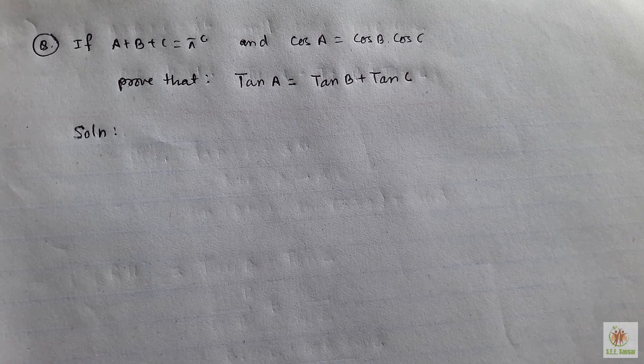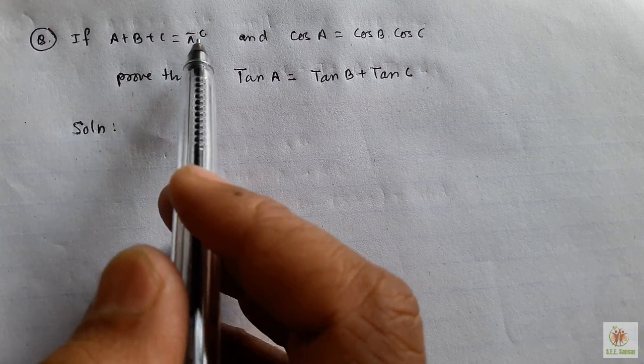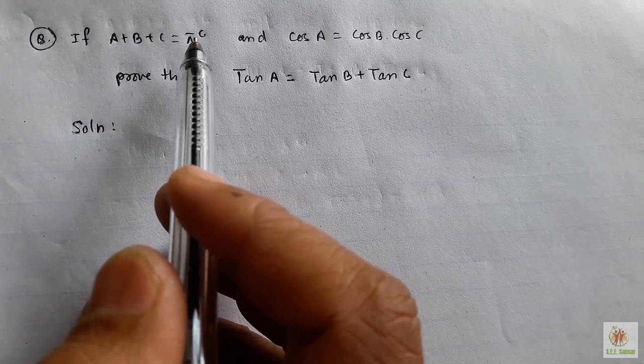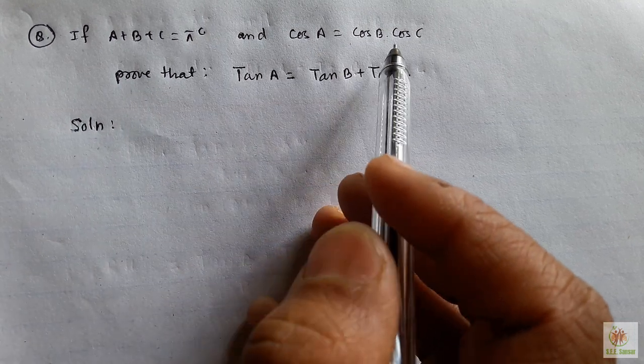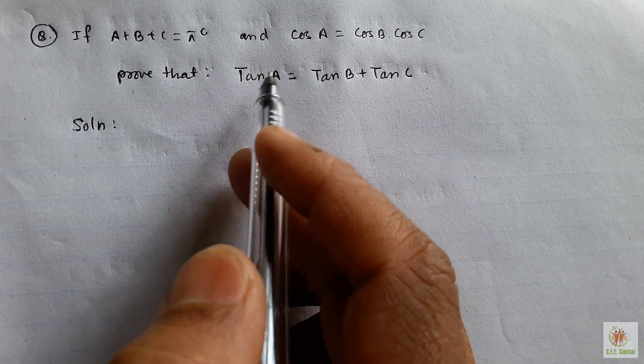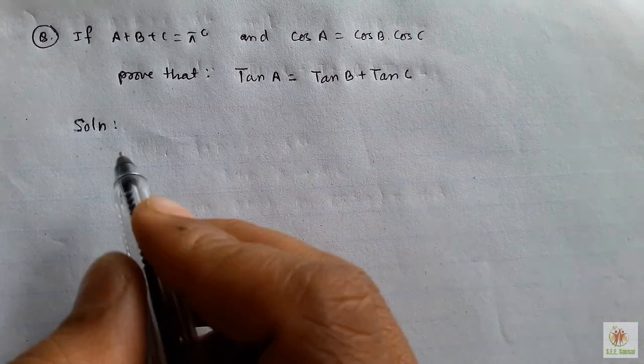Here I'm with another question. The question is: A + B + C equals π radians (π radians means in degrees it is 180 degrees), and cos A equals cos B dot cos C. These are given conditions. According to this given condition, we have to prove tan A equals tan B plus tan C.